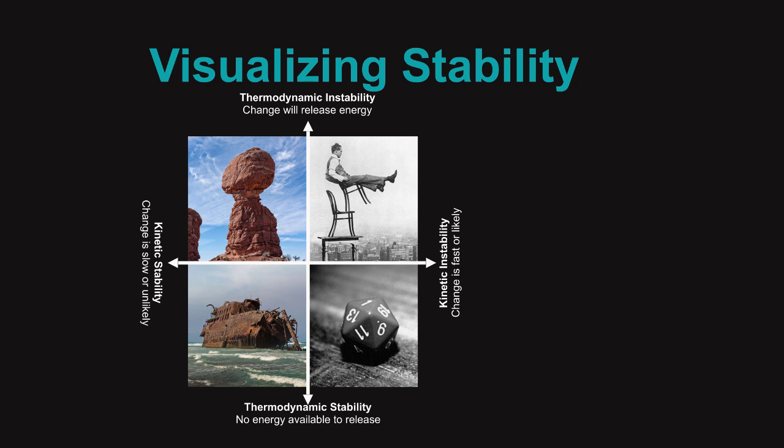On the bottom right, this die on a flat surface is in a thermodynamically stable state. There's nowhere for it to go to release energy, but kinetically it's fairly unstable. You bump it a little bit, it'll go rolling across the table.